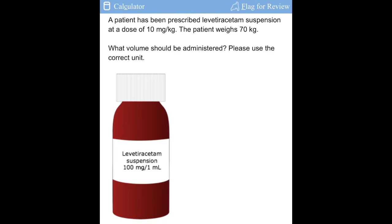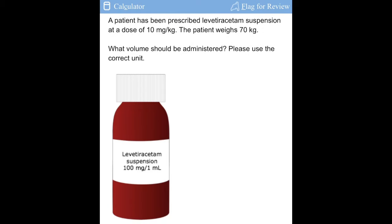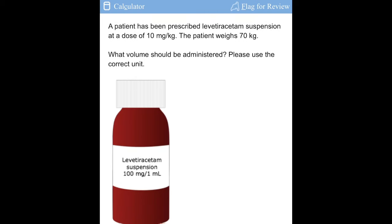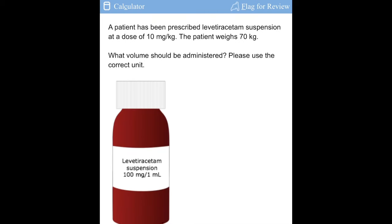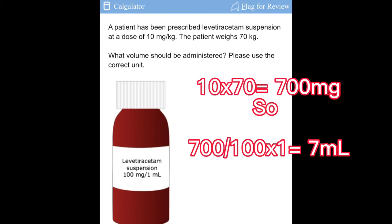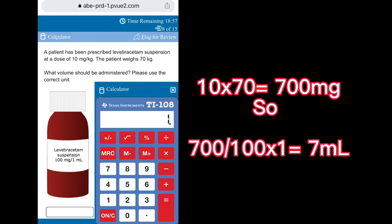With this one, it's asking us to provide the volume that should be administered. The prescribed medication is 10 milligram per kg and the patient weighs 70 kilograms. What we will do is multiply our 10 milligram by the patient's weight. After you get your answer, divide it by the available dose in mL.